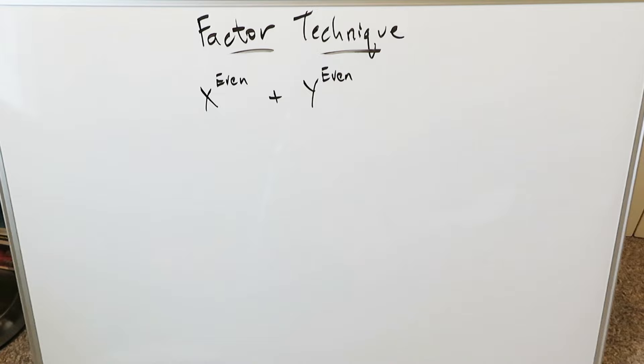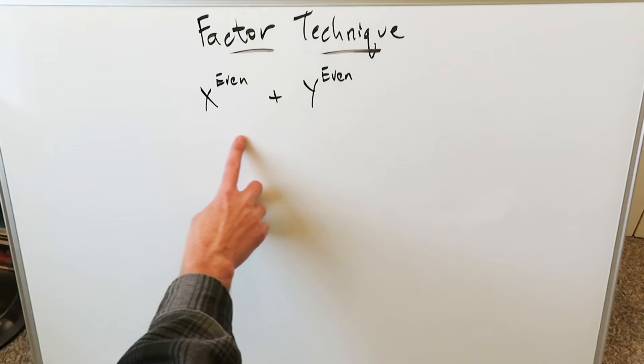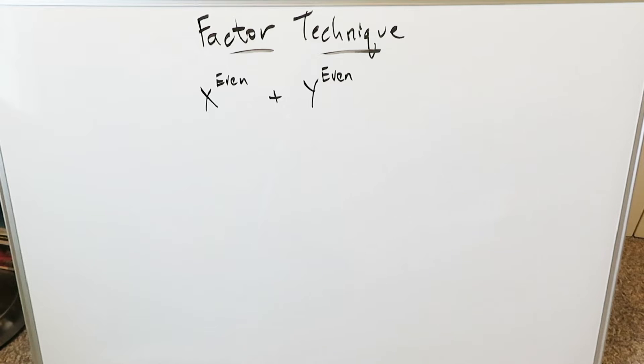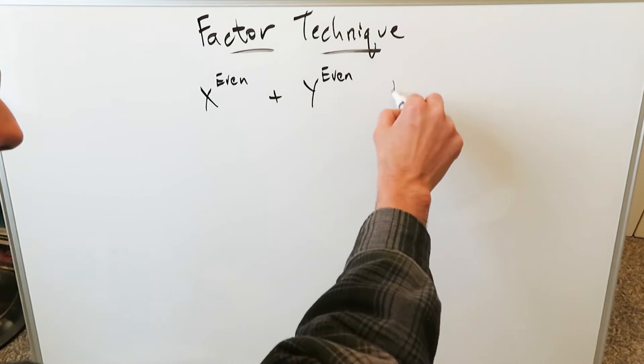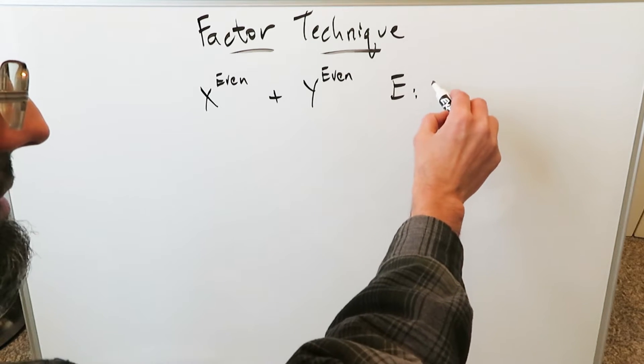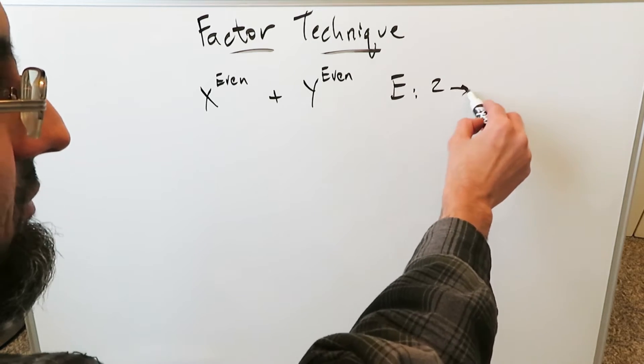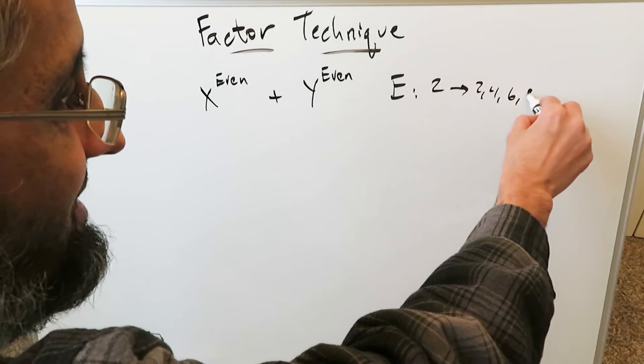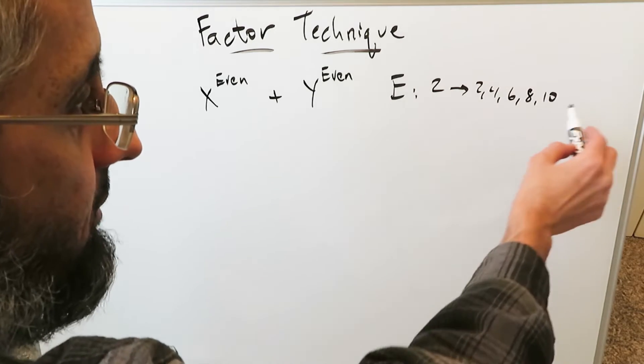In this video we're looking at the factoring technique, the step-by-step procedure which occurs behind the scenes for you to handle something like this, factoring x to the power of an even number plus y to the power of even number, where I'm abbreviating the even numbers are multiples only of 2, which means you'll be looking at 2, 4, 6, 8, 10 onwards.